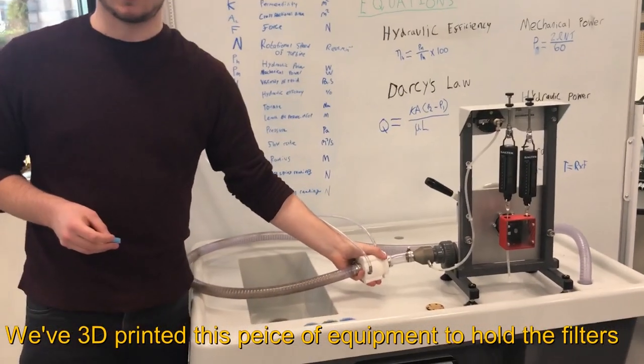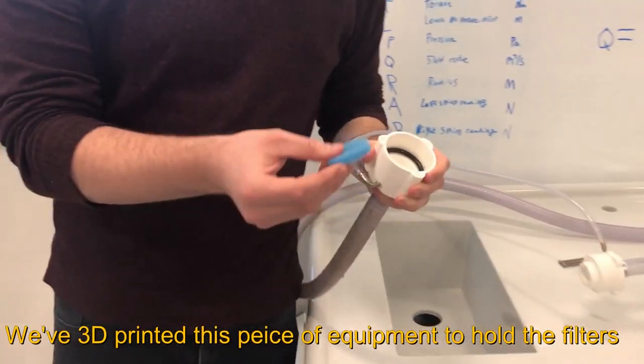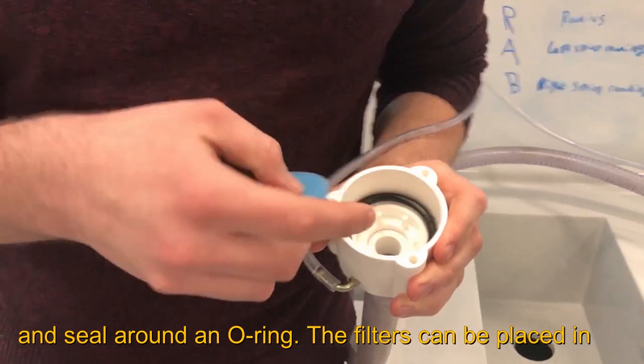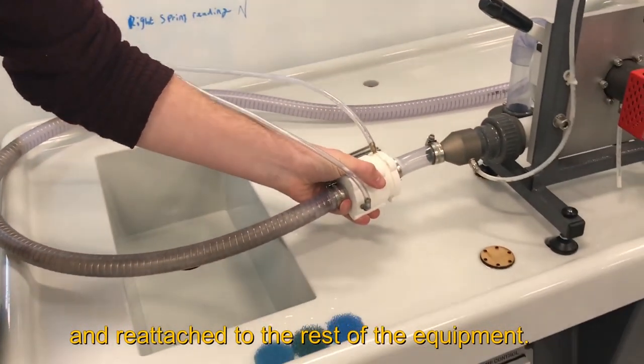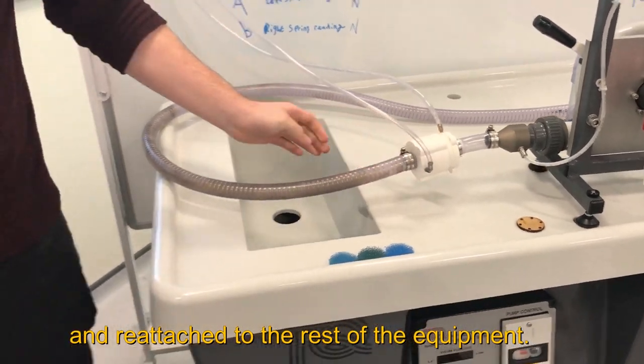We've 3D printed this piece of equipment to hold the filters and seal around an o-ring. The filters can be placed in and reattached to the rest of the equipment.